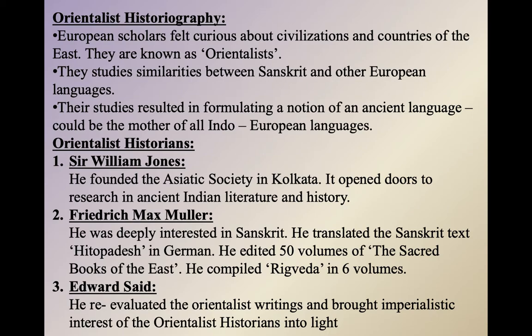Some orientalist historians focused mostly on Sanskrit literature and the Vedic tradition. Sir William Jones founded the Asiatic Society in Kolkata in the year 1784. This society opened doors for research in ancient Indian literature and history, encouraging more people interested in Asian history to do more studies, research, and write more books about ancient Indian literature and history.